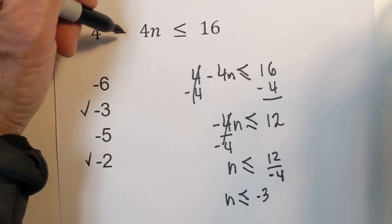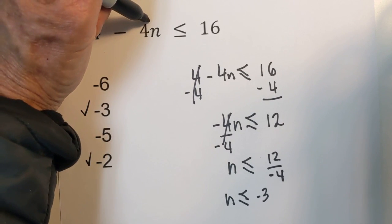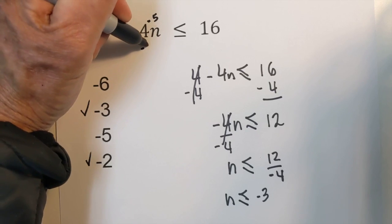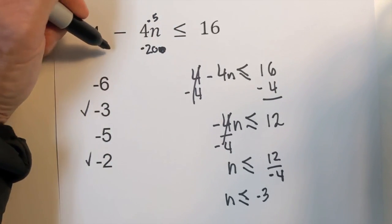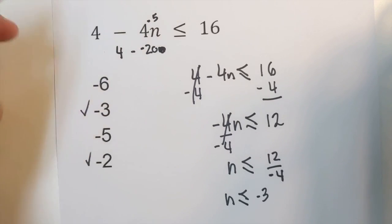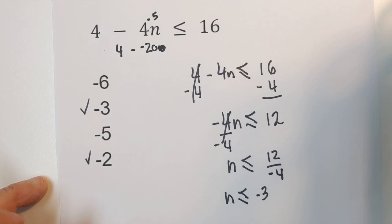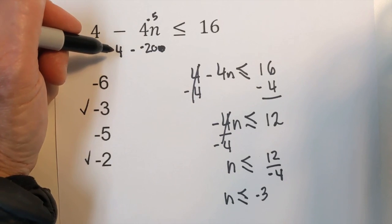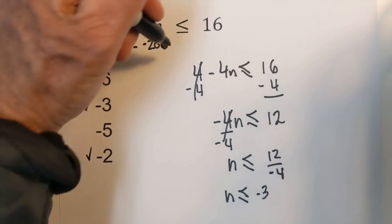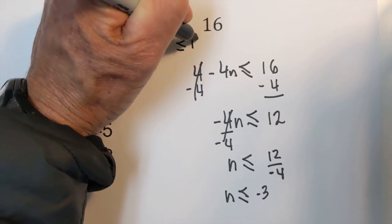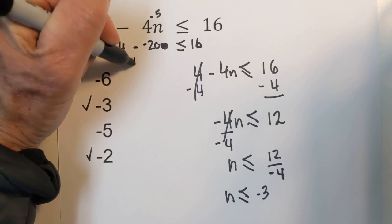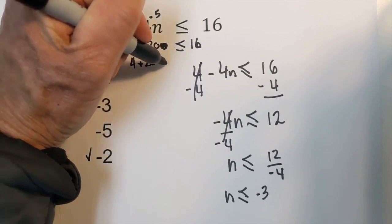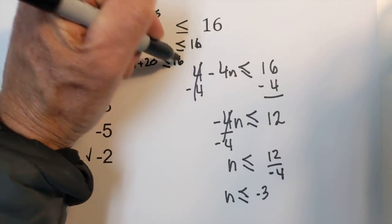So we have 4 minus 4 times a negative 5. Negative 4 times negative 5 is positive 20. And so now what we do is 4 minus 20, or 4 plus 20 is less than or equal to 16. Remember when you have minus a negative it's like 4 plus 20 is less than or equal to 16.